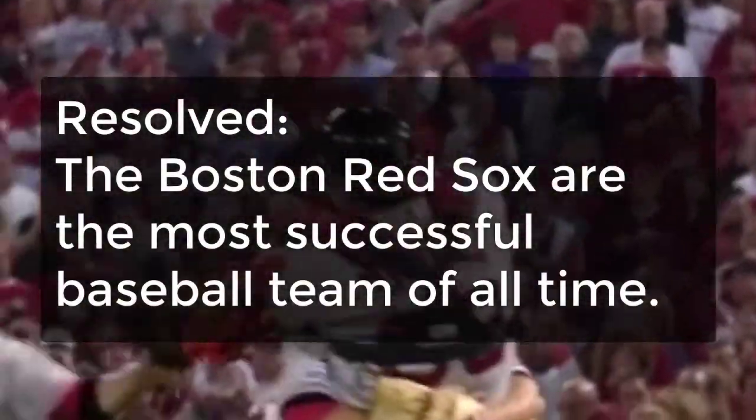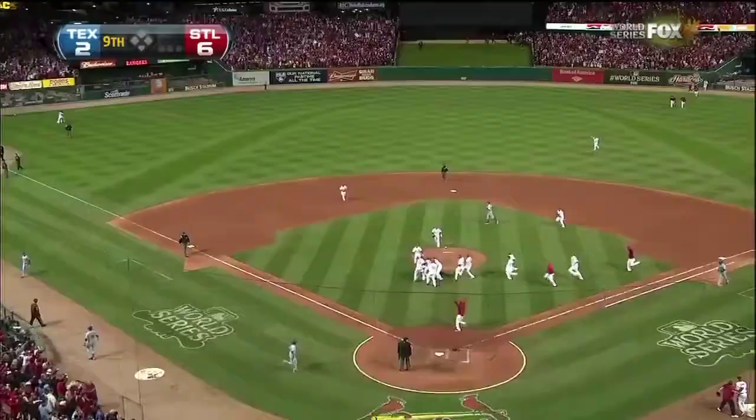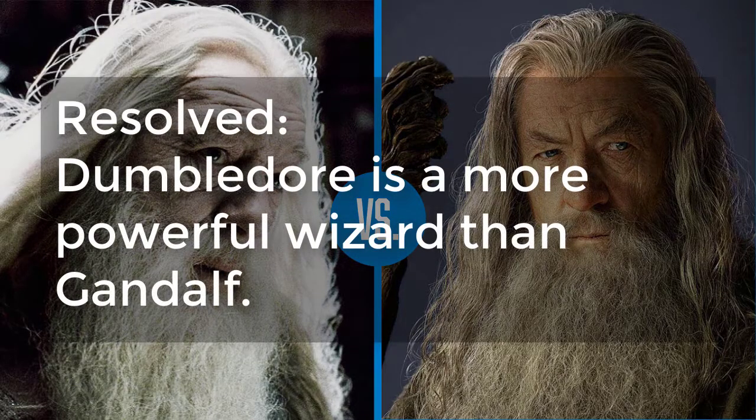Let's look at two quick examples. First, a resolution of fact — resolved: the Boston Red Sox are the most successful baseball team of all time. In this instance, you might craft a counter contention that, as of the recording of this video, two other teams — the New York Yankees and the St. Louis Cardinals — have both won more World Series titles than the Red Sox have. In your tie back, you can use this to support your overall argument that winning fewer World Series titles means the Red Sox are not the most successful baseball team of all time. Let's take a look at a resolution of value which includes a comparison — resolved: Dumbledore is a more powerful wizard than Gandalf. In structuring your counter contention here, you should seek to make arguments that Gandalf is more powerful than Dumbledore. This gives you two paths to winning the debate: either you can prove through refutation that they are equally powerful, or through your counter contention that Gandalf is more powerful than Dumbledore.